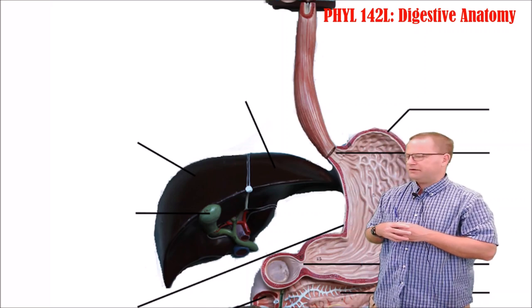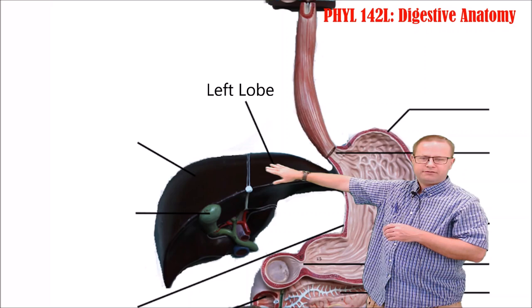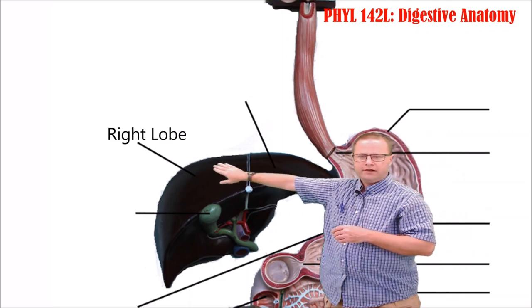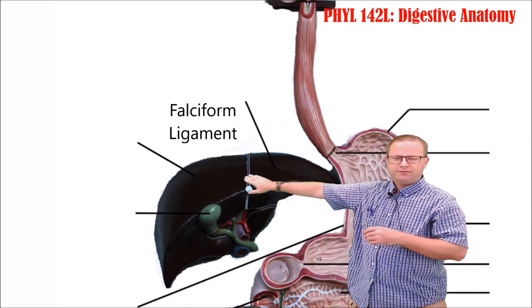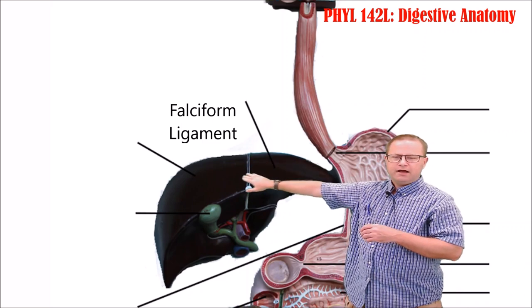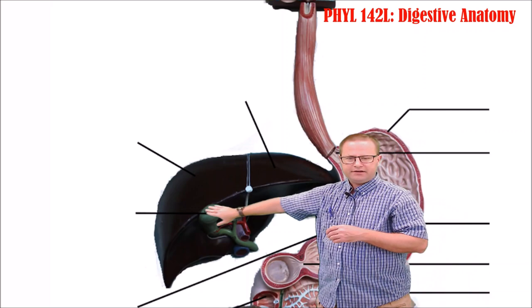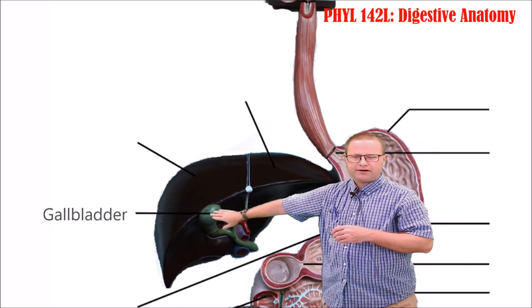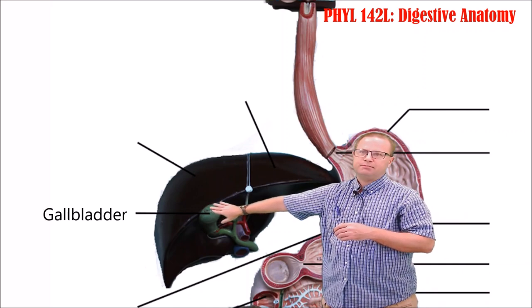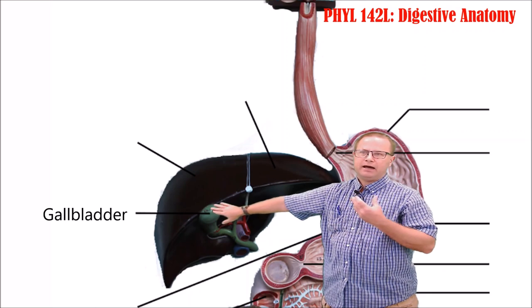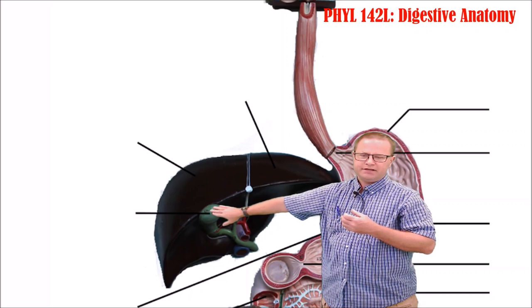For the liver, we have left and right lobes. The falciform ligament suspends the liver from the body wall and diaphragm. Back down here you can see the gallbladder, which stores and concentrates bile. Bile is actually made in the liver and stored and concentrated in the gallbladder.